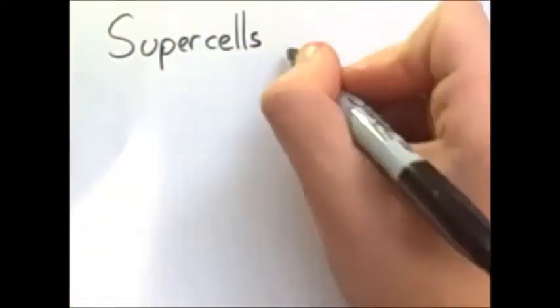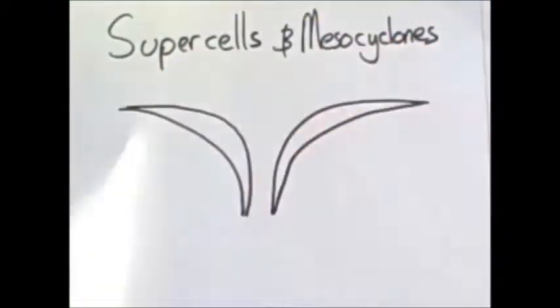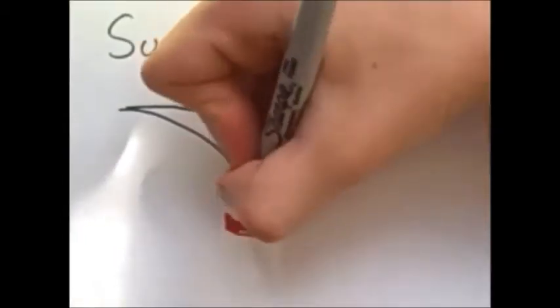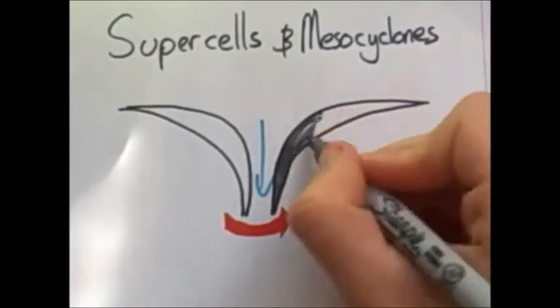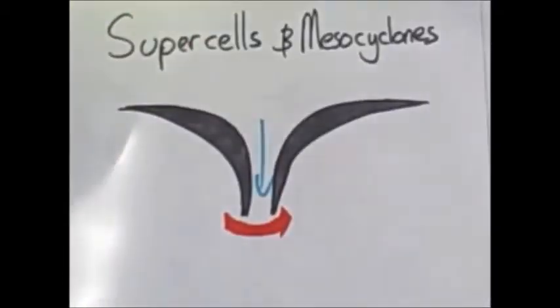There are also supercells and mesocyclones. A supercell is basically a mesocyclone with added features. And a mesocyclone is spinning air around a vertical axis. They have a core of low pressure and have cyclonic tendencies. A mesocyclone turns into a supercell when thunderstorms occur. They are the most severe of the class.